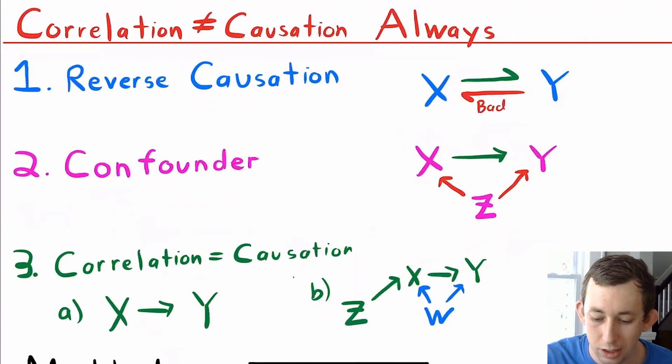It could be reverse causation, so X could cause Y, but Y could also cause X at the same time, which is bad. There could be a confounder, so X could cause Y, but Z could also be causing X and Y.